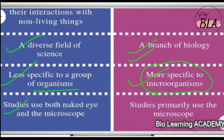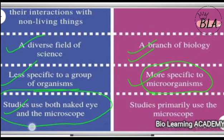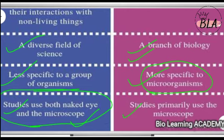In biology, studies use both the naked eye and the microscope, because you get to see large organisms as well as small organisms — you can visualize them with the naked eye. But when we talk about microbiology and microorganisms, we need a specific microscope because they cannot be visualized without one. This is the overall difference between microbiology and biology.